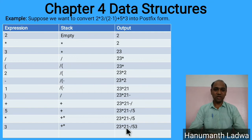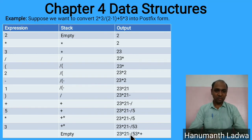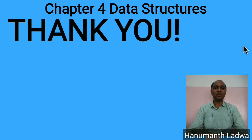We have reached the end of input. Now we pop all remaining operators from the stack and output them. First pop * (multiplication), then pop +: final output = '2 3 * 2 1 - / 5 3 * +'. The stack is now empty. That's all for this video. Thank you very much for watching, and we will see you in the next video.